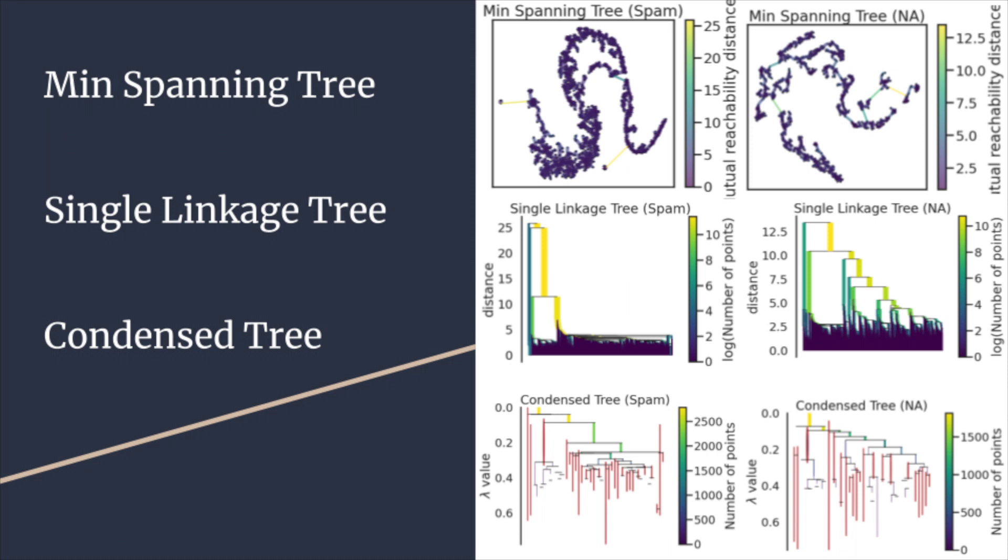The single-linkage tree tells us how the data points in our two subsets are grouped together based on their pairwise distance. The height of each branch represents the distance between the clusters that are being merged in log number of points. In addition to this, the vertical axis of the tree shows the height of the branches, and the horizontal axis shows the data points in the dataset.